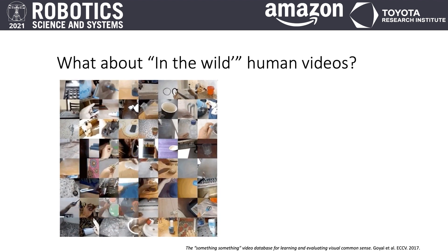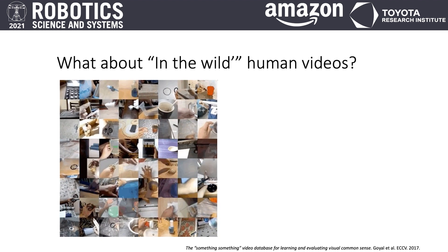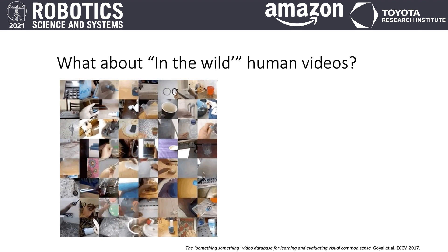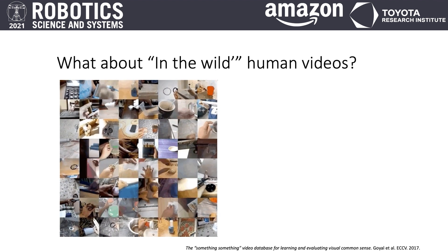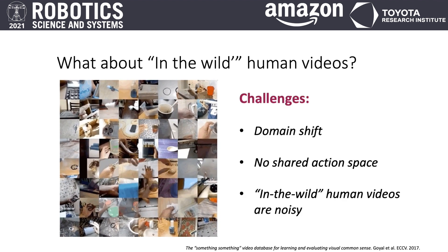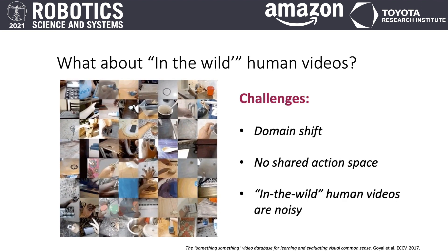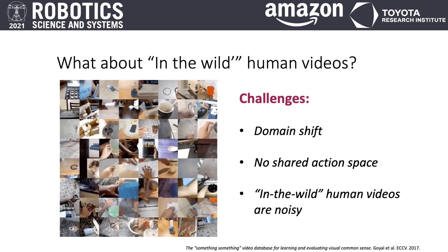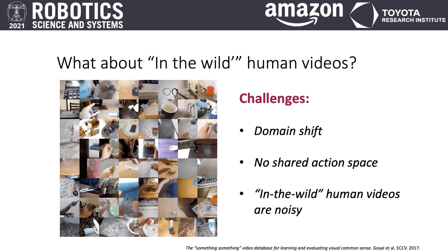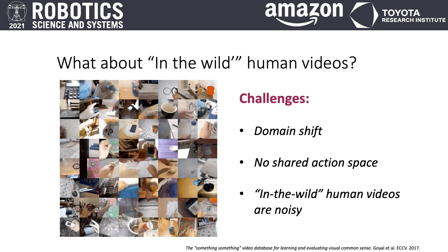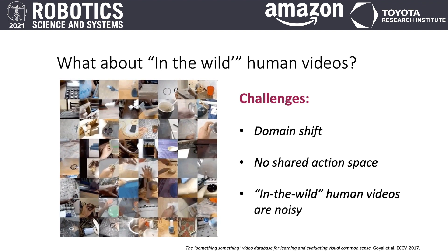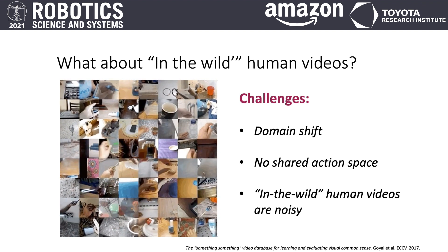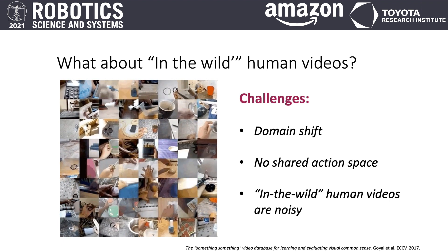Alternatively, in-the-wild videos of humans, such as from YouTube or the Something Something dataset shown here, is a huge source of very diverse data that already exists. Now learning from this sort of data is very challenging for a number of reasons. First, there exists a large visual domain shift in the observation space. Second, there is no clear mapping between a human's action space and a robot's. Lastly, in-the-wild human videos may often be low quality and noisy.